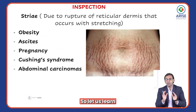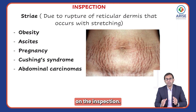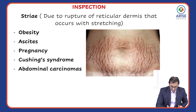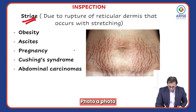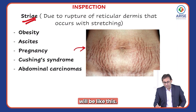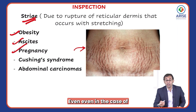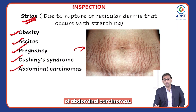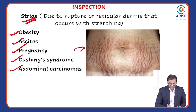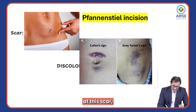Now let's learn some more points related to physical examination of the abdomen. On inspection — inspection means only observation — we can see a scaphoid or distended abdomen. A distended abdomen can be seen in cases of obesity, during pregnancy, in Cushing's syndrome, and in abdominal carcinomas.